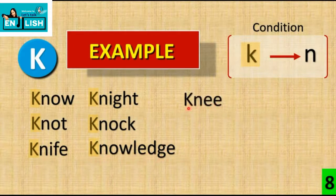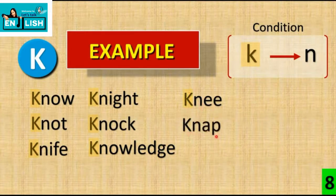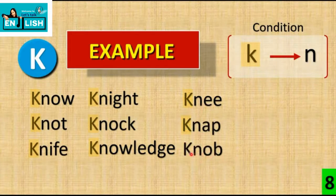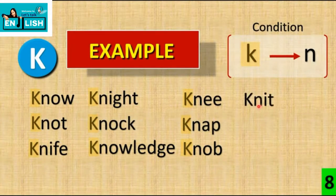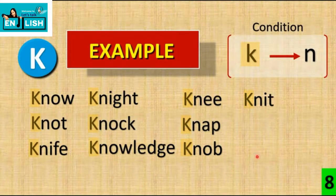K के बाद N आया है फिर K silent है। Knap में भी K silent होगा। Knob में K silent है — सभी के अंदर K के बाद N आ रहा है। Knit में भी K silent है N के वजह से। Last one — Kneel में भी K silent है।